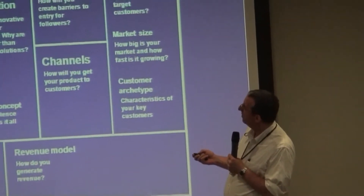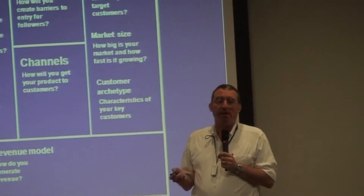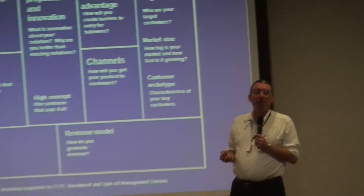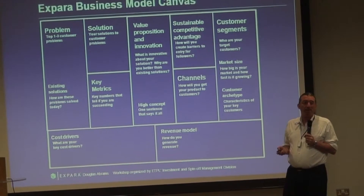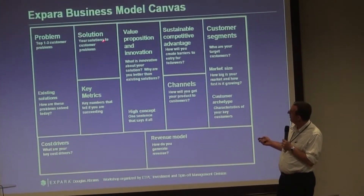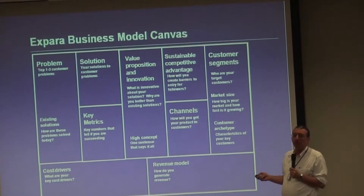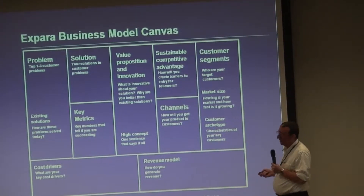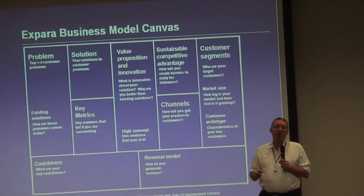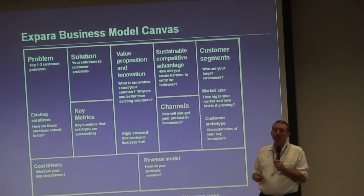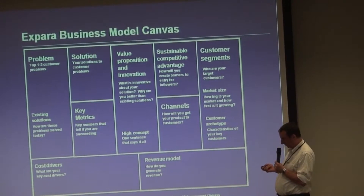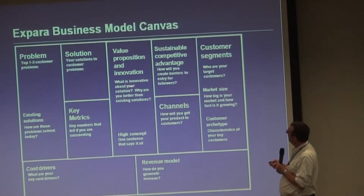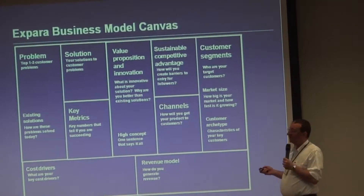We like to start with what are the top one to three customer problems that we attempt to solve. Then we look at the existing solutions — how are these problems solved today? Then we look at our solution to the customer problem. Then we look at our key metrics: how will we know if we are succeeding once we launch the business? Then we look at what we call value proposition innovation — what is the innovative value solution and why are you better than existing solutions?